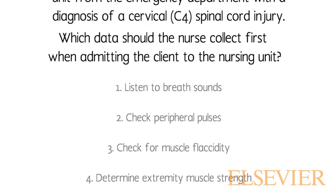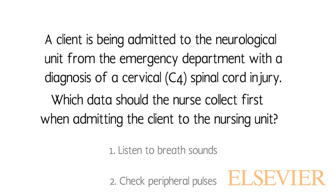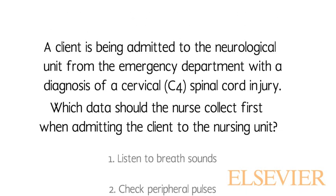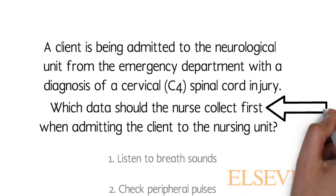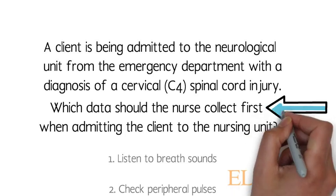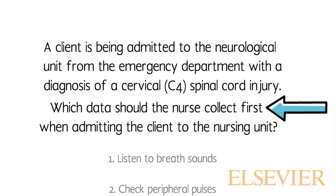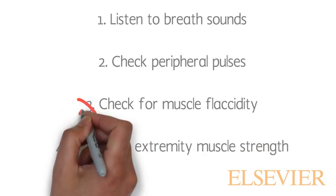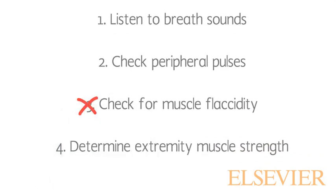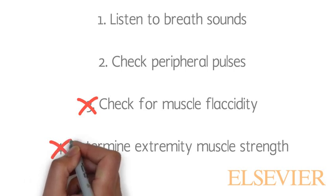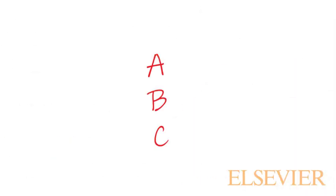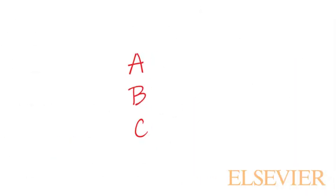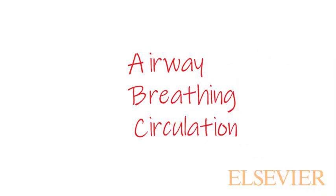Let's take a look at what the question is asking. Note the strategic word "first" in the question. Although some or all of these may be important, we want to focus on what is the most important to do first. We can eliminate options three and four because they are comparable or alike. Use the ABCs — airway, breathing, and circulation — to direct you to the correct option.